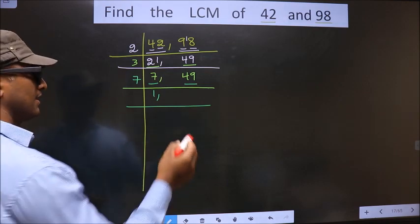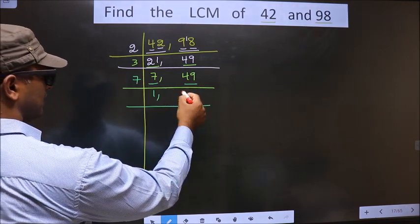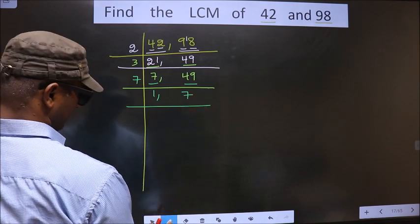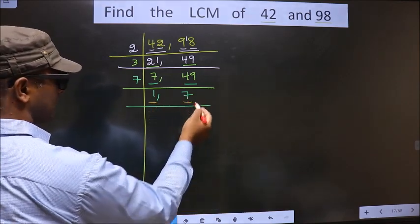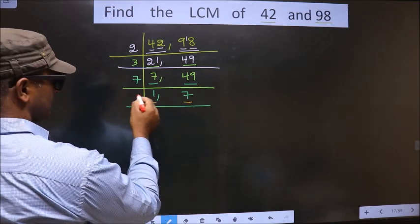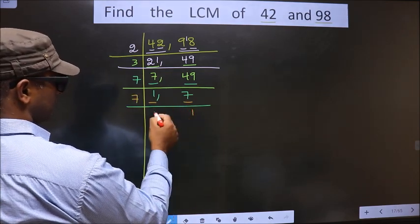So here 49, when do we get in 7 table? 7 times 7 is 49. Now here we got 1, so focus on the next number that is 7. 7 is a prime number, so we take 7 once.